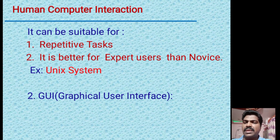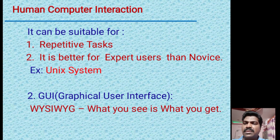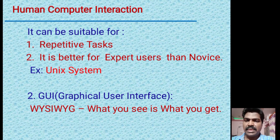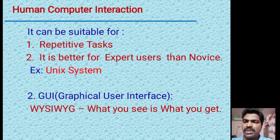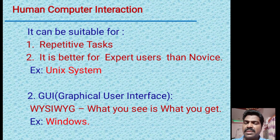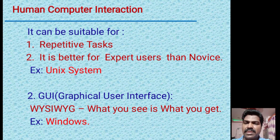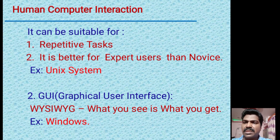Next is GUI — graphical user interface. It can also be called WYSIWYG, meaning 'what you see is what you get.' Using this type of interface, any person with minimum knowledge can access it. An example is the Windows operating system. It is much easier for any person — by seeing what is on the screen and clicking on it, they can get the information.